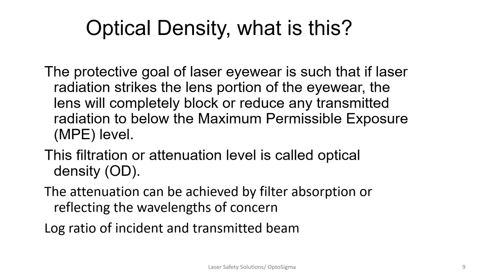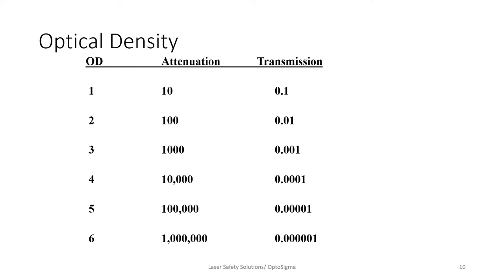Optical density is the attenuation. The goal of laser eyewear is that any laser radiation striking the lens will be blocked or reduced so that anything transmitted through will be at or below the MPE value. This attenuation is achieved by the filter absorbing photons or reflecting them. Optical density is the log ratio of the incident beam versus what is transmitted. An OD of 1 means one tenth is transmitted; OD 2, one hundredth; OD 3, one thousandth — and it goes on from there. Optical density has no units. Scale number is roughly how the European standard represents what you would think of as optical density.